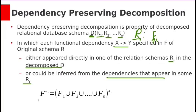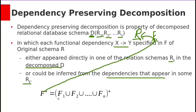A decomposition is dependency preserving if F+ equals (F1 ∪ F2 ∪ ... ∪ Fn)+. Here F+ is the closure of functional dependencies in the original relation R, and F1, F2, ..., Fn are the functional dependencies in the decomposed relations R1, R2, ..., Rn respectively.